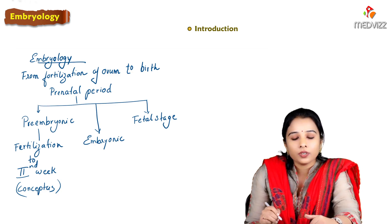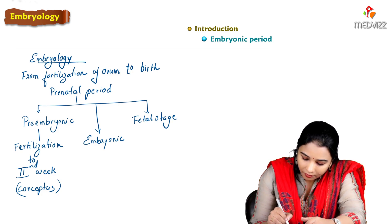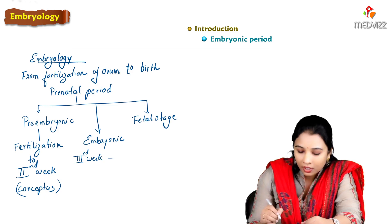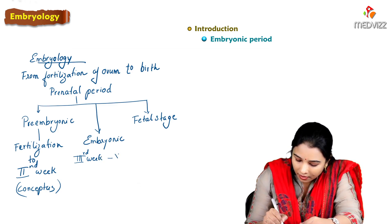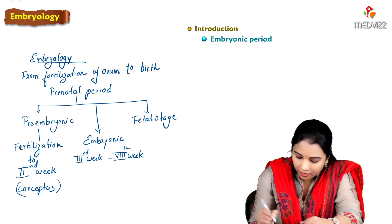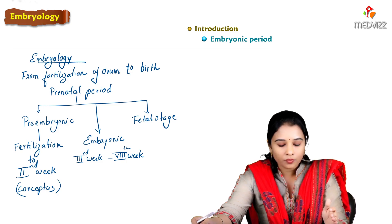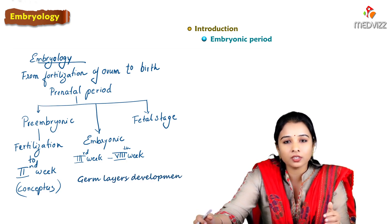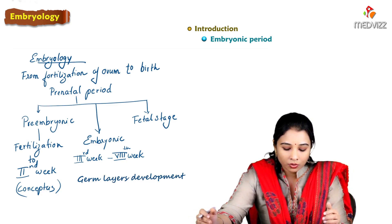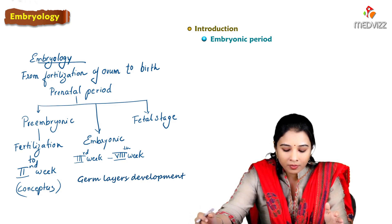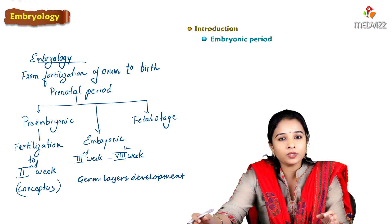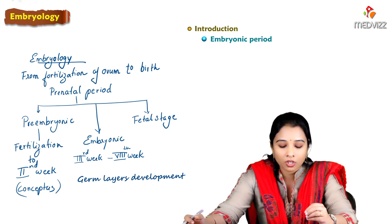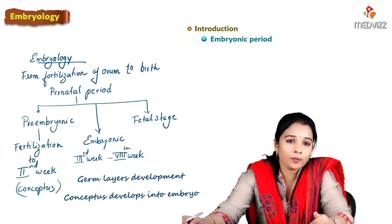The embryonic period extends from the third week until the end of the eighth week of intrauterine life. An important change during the third week is the development of germ layers — ectoderm, endoderm, and mesoderm — which is called gastrulation. From gastrulation through the eighth week, we see the development of all structures; the conceptus develops into an embryo during this embryonic period.